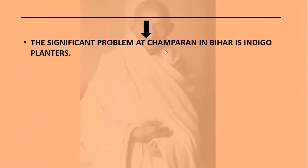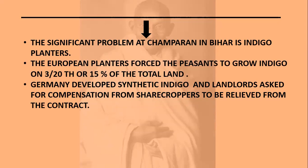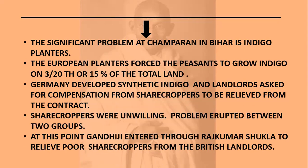The significant problem at Champaran in Bihar concerned indigo planters. Indian peasants were compelled to grow indigo on 3/20th — that is, 15 percent — of their entire land, and surrender the entire harvest to the British landlords. When Germany developed synthetic indigo, the landlords asked for compensation from sharecroppers to be relieved from the contract. Sharecroppers were unwilling, and the problem erupted between the two groups. At this point, Gandhiji entered through Raj Kumar Shukla to relieve the poor sharecroppers.